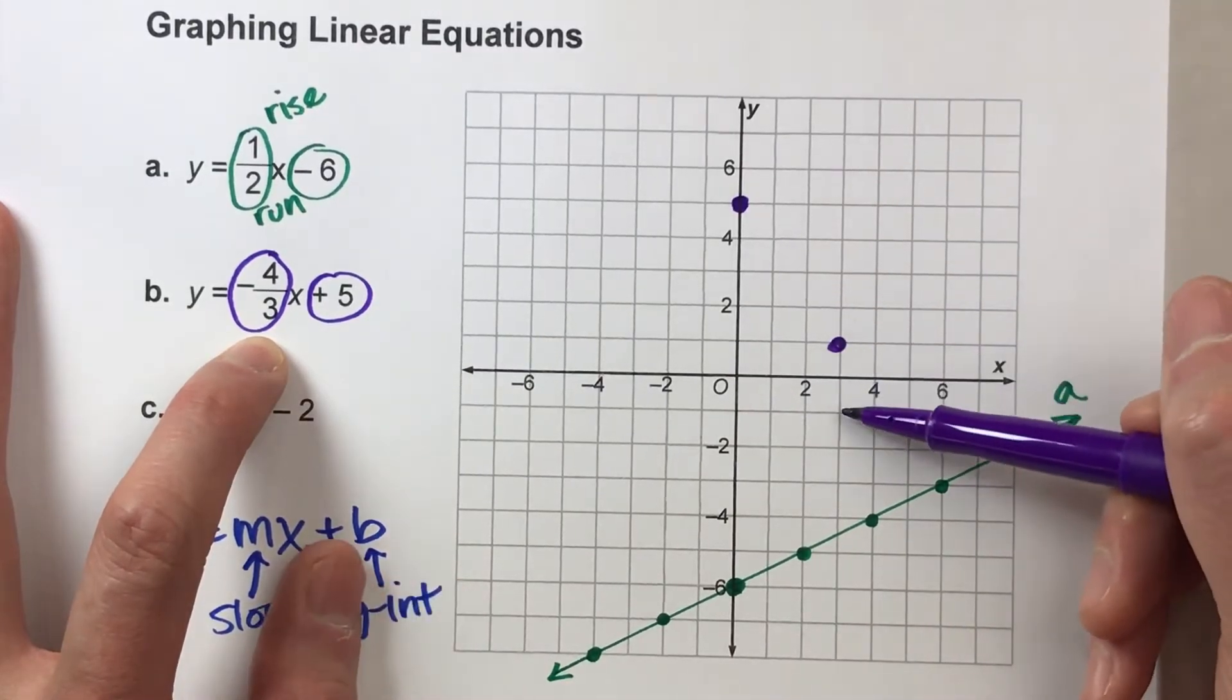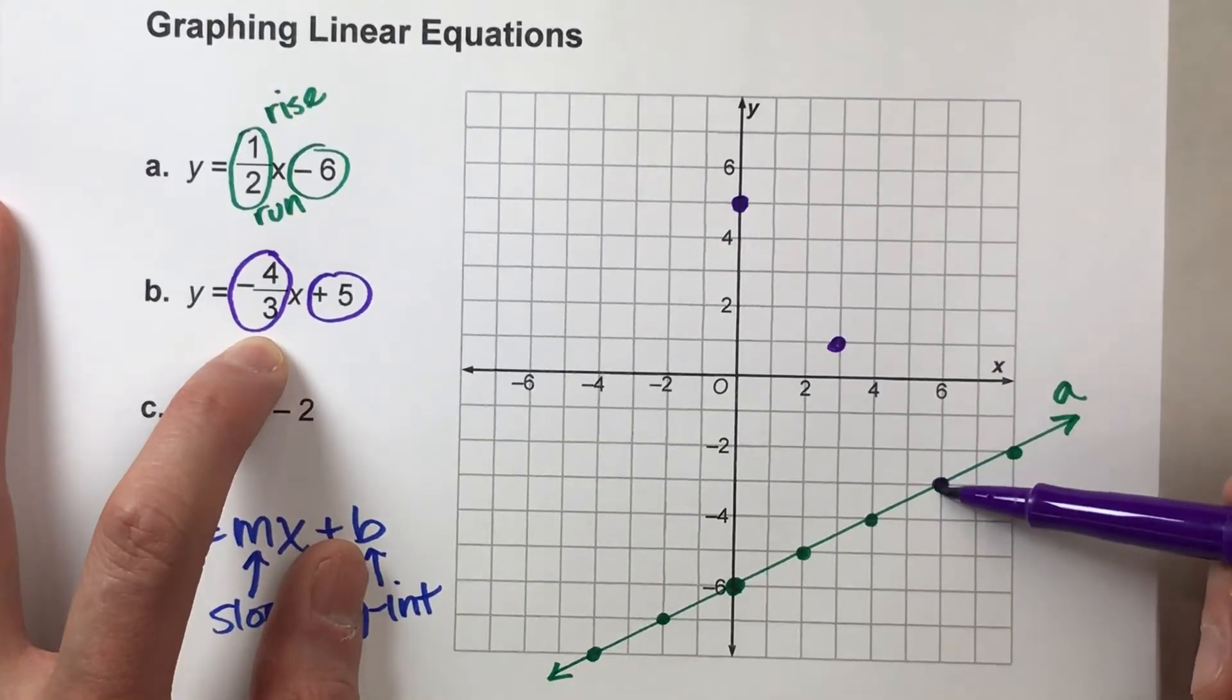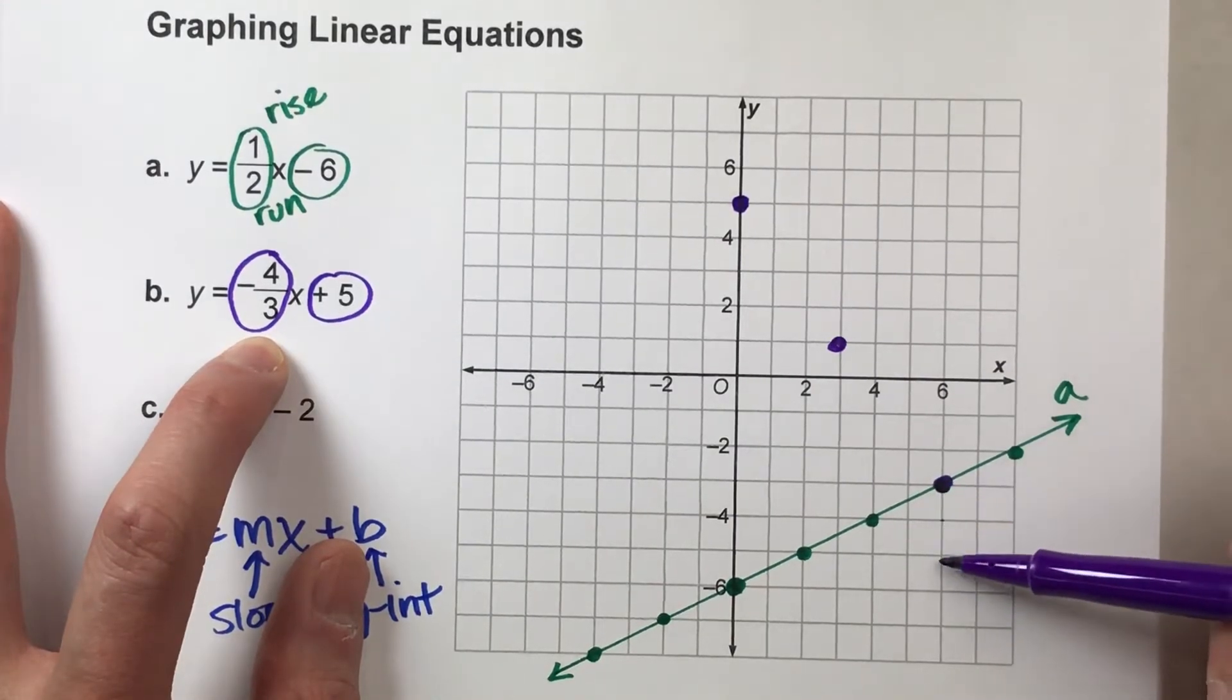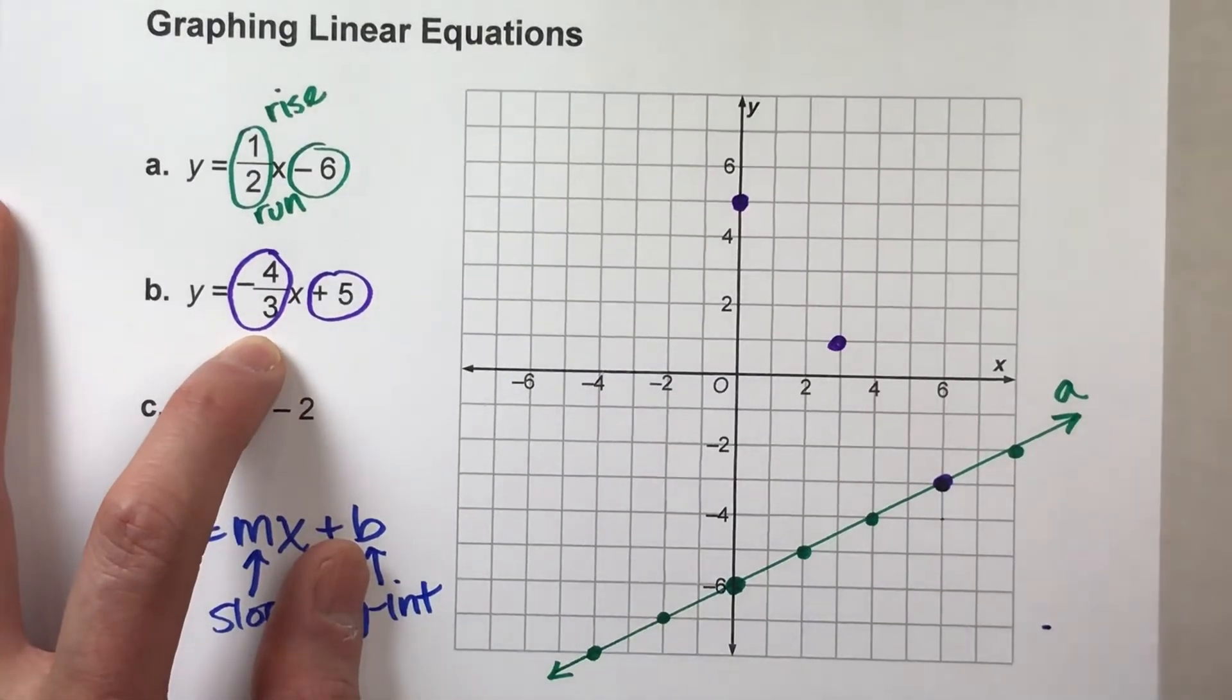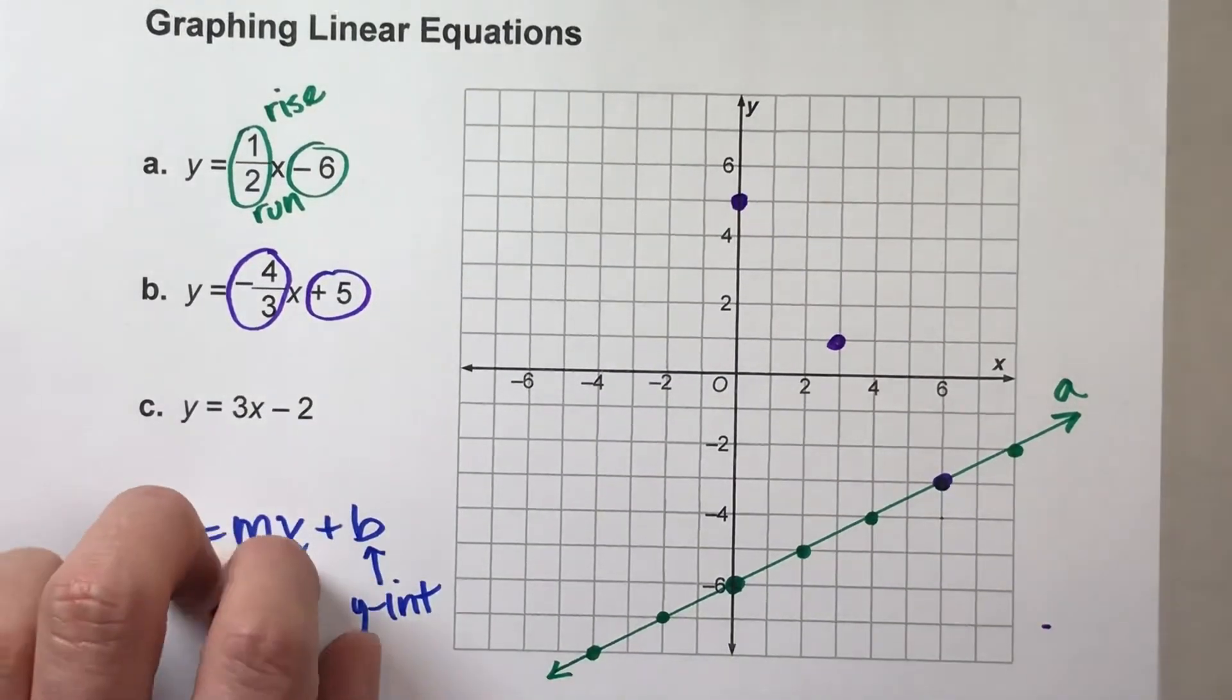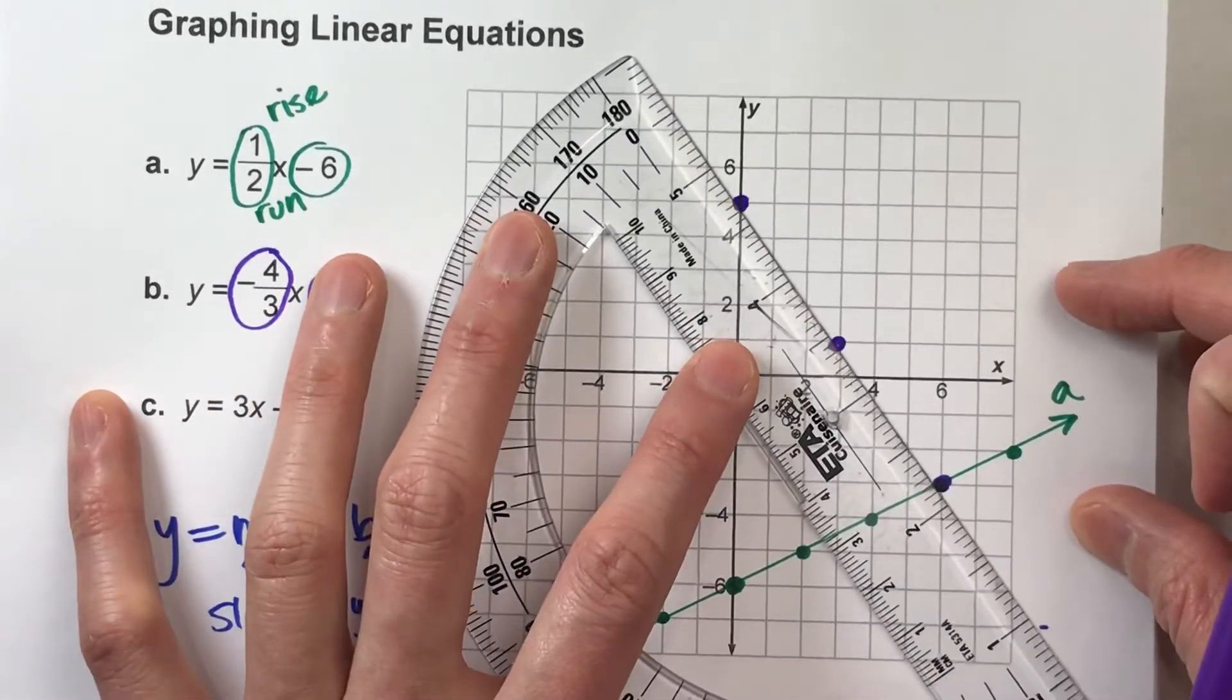Down 4, 1, 2, 3, 4, right 3. 1, 2, 3. Hey, they overlap. Down 4, 1, 2, 3, 4, right 3. 1, 2. Okay, so it goes off the grid a little bit, but you can kind of see what the pattern of the line is going to look like based off these points.